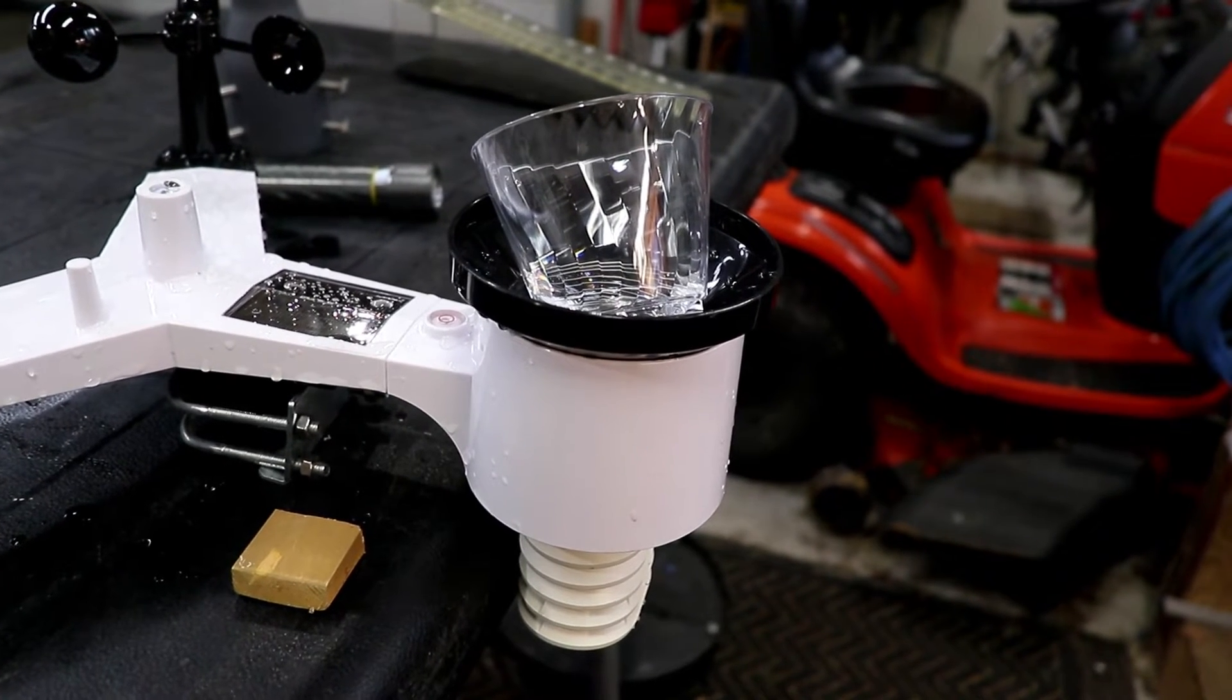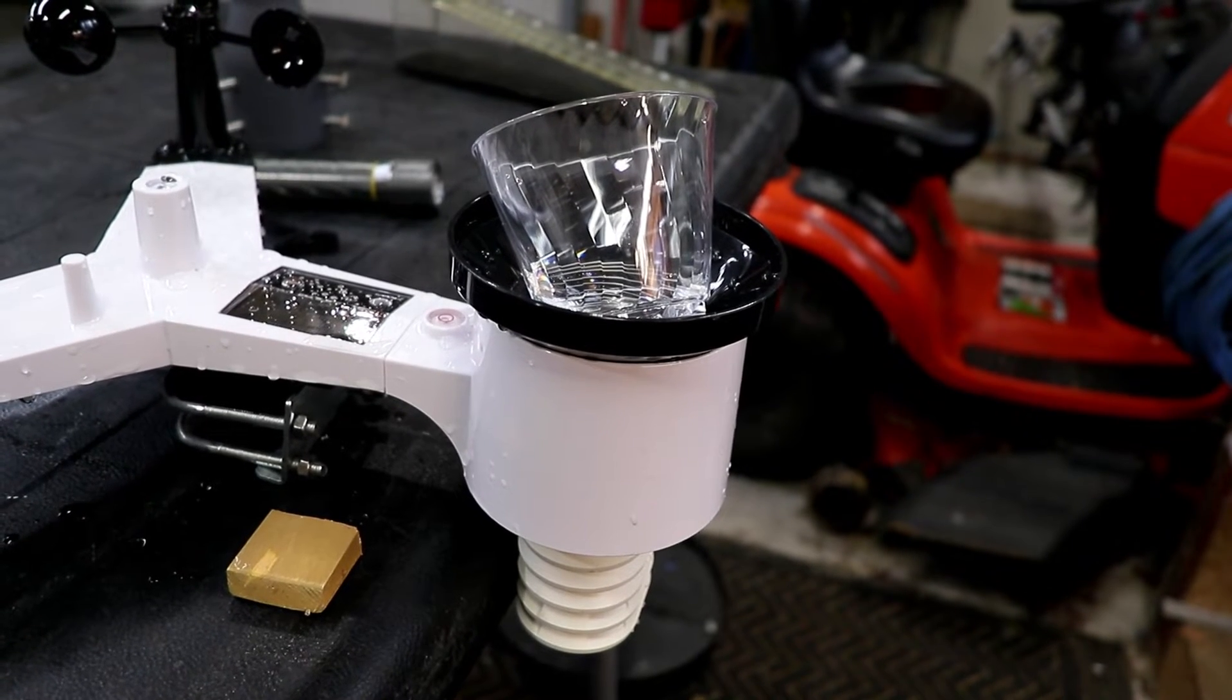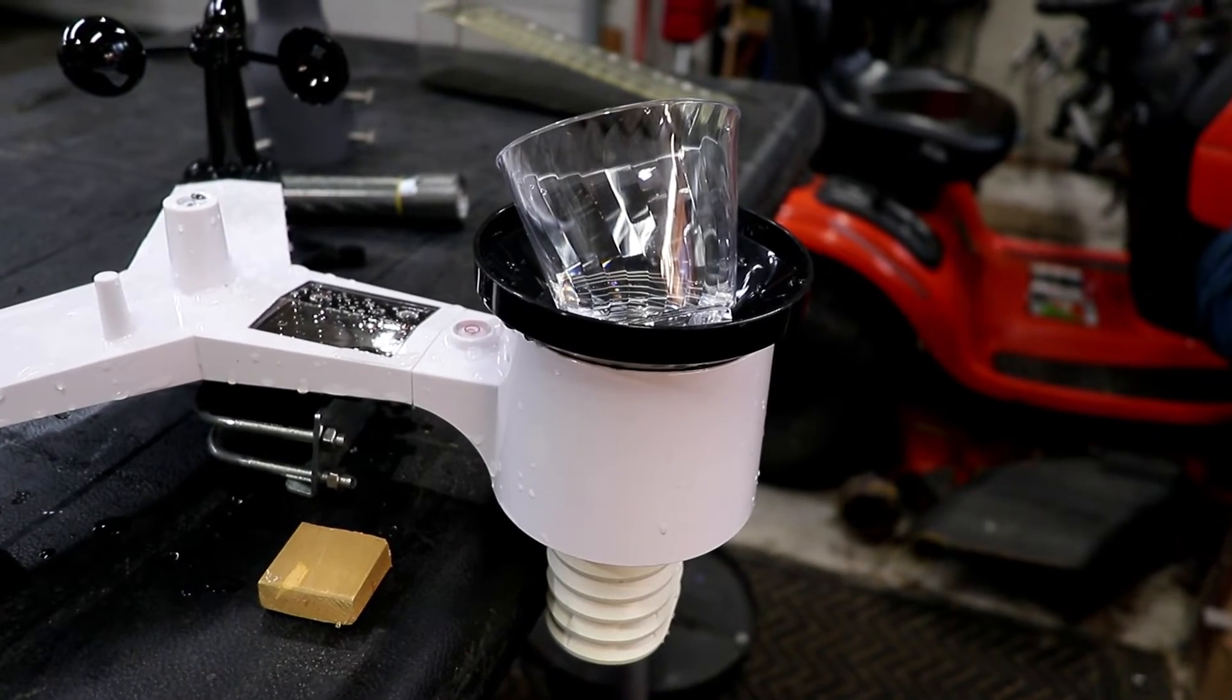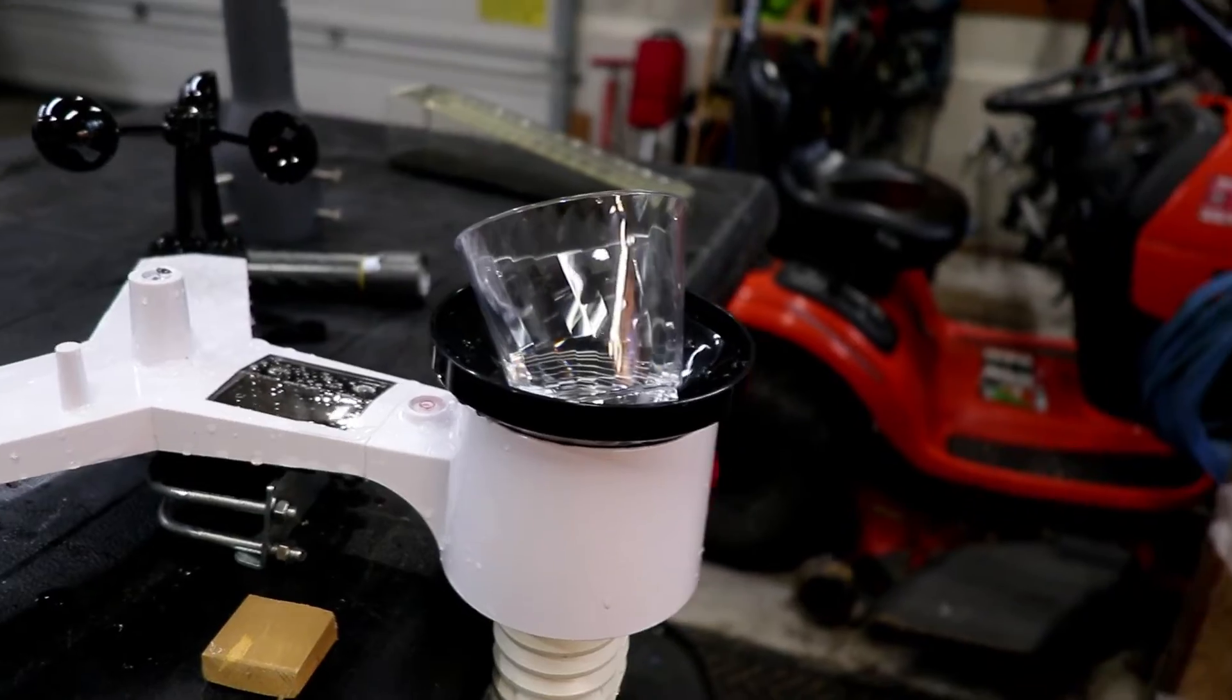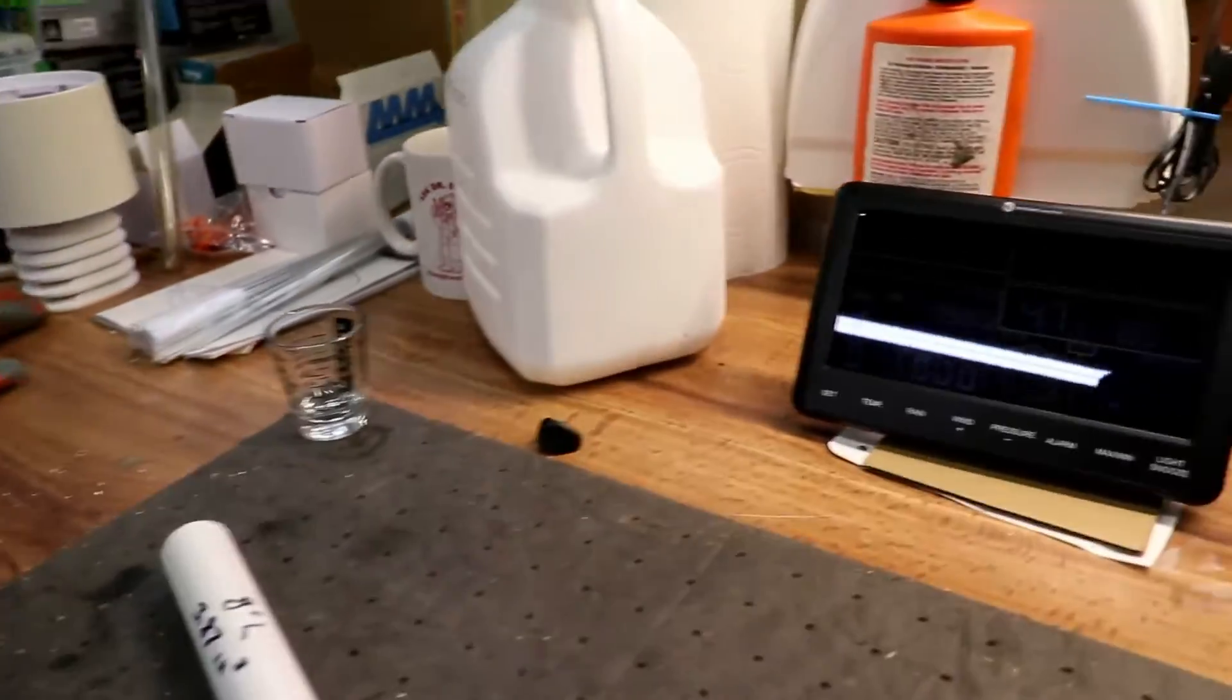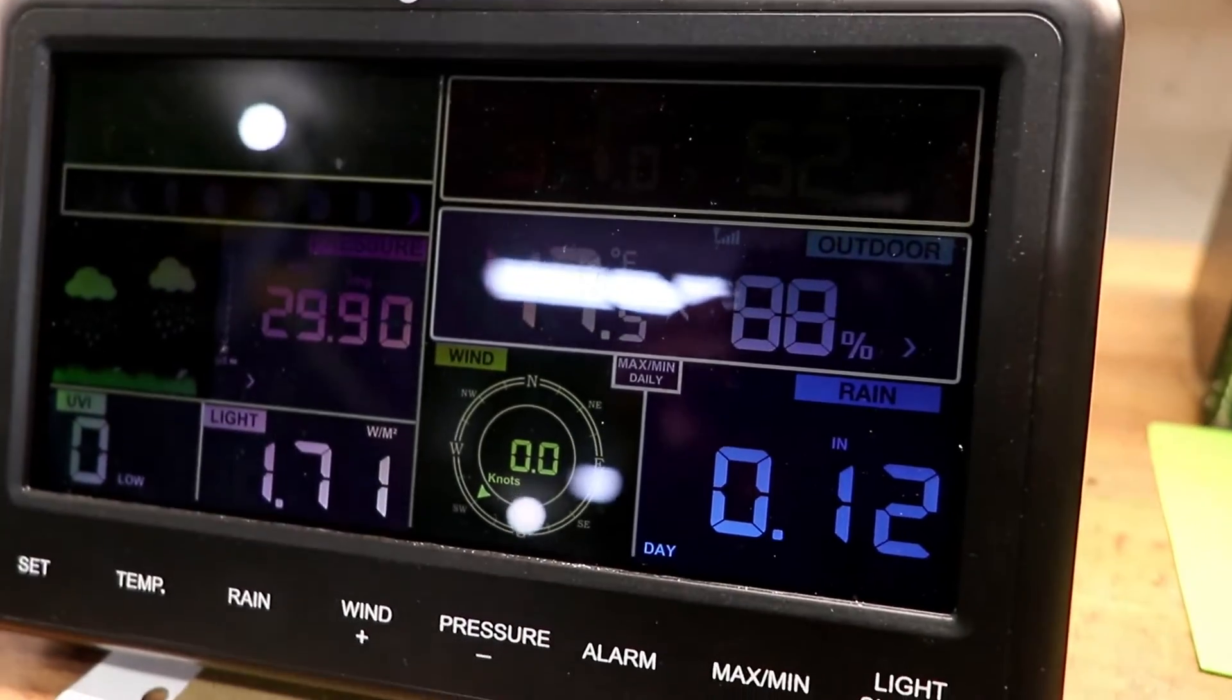You can hear it go click there. Each one of those clicks is equivalent to 0.01 inch of rain. Let's go see how this is looking so far on the console where the information is being collected. You can see so far we've collected 0.12 inches of rain, and we'll let that go and see how close we come to 0.25.